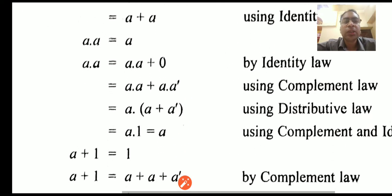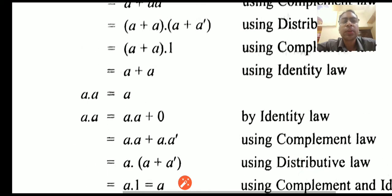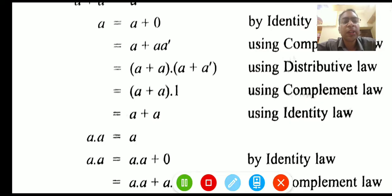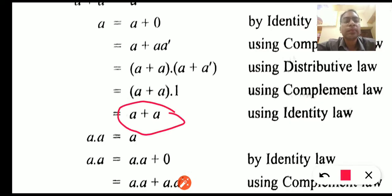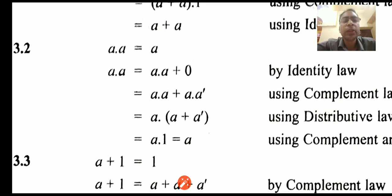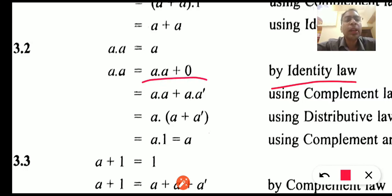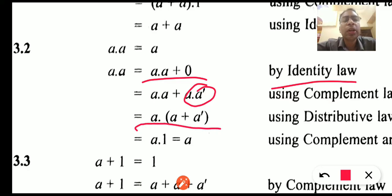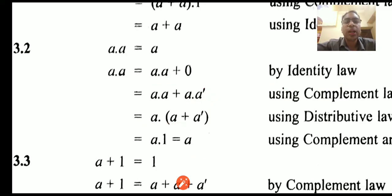Next, a dot a is equal to a. We begin with the LHS; by the identity law we can write it as a dot (a plus 0). This 0 can be rewritten as a dot a' using the complementary law. Then using distribution we expand it, and finally by the complement law a plus a' is equal to 1, so a dot 1 is equal to a. In this way we can prove this law.